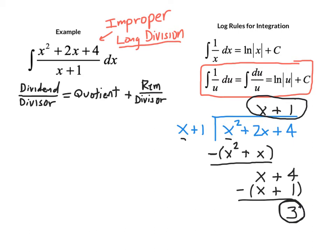So this is guaranteed in this case when the divisor is linear, this rewrite is guaranteed to give us a form that we can integrate. So here we end up with x plus 1 plus 3 over x plus 1.